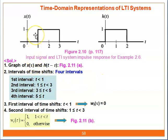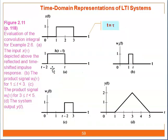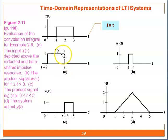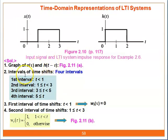First, change Xt to Xtau and Ht to Htau. Then flip Htau and shift it, so it becomes Ht minus tau — shown in figure 2.11a. You have Xtau over here and Ht minus tau which has been reflected and time-shifted. Next, break it into several parts — there are 4 intervals for this case: T less than 1; T greater than or equal to 1 and less than 3; T greater than or equal to 3 and less than 5; and T greater than or equal to 5.